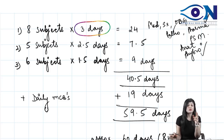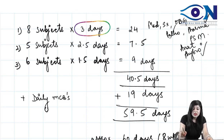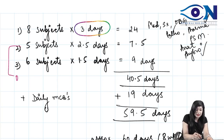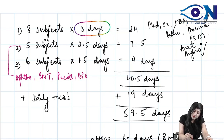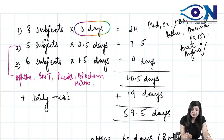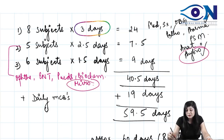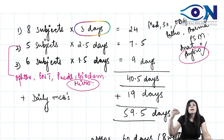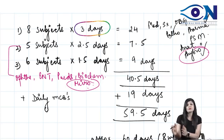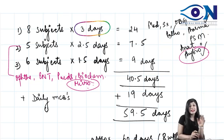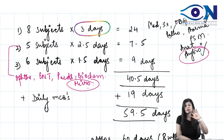Then we have five intermediate subjects — ENT, Pediatrics, Biochemistry, and Microbiology are examples. There is a plus-minus between Micro and Physiology: I added Physiology to the large subjects because it forms the basis of Medicine. If you are more comfortable with Physiology, you can exchange it with Micro — give three days to Micro and 2.5 days to Physiology. Intermediate subjects get two to two-and-a-half days each.